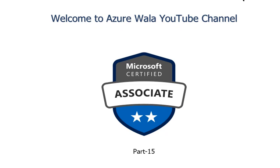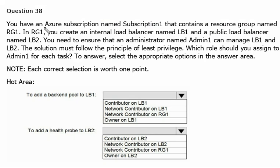Let's move to question number 38. You have an Azure subscription named Subscription 1 that contains a resource group named RG1. In RG1, you create an internal load balancer named LB1 and a public load balancer named LB2. You need to ensure that an administrator named Admin1 can manage LB1 and LB2. The solution must follow the principle of least privilege.